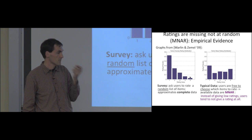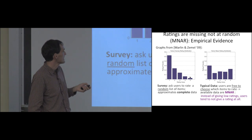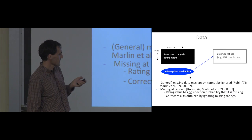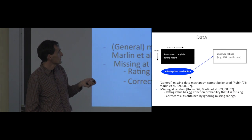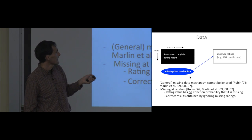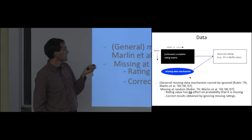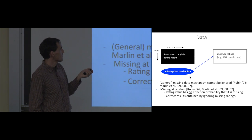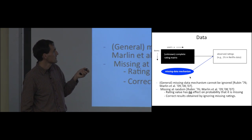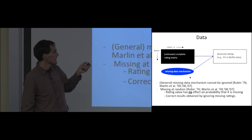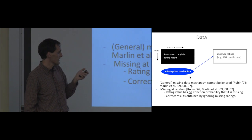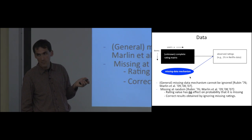To cast it differently: the observed ratings are a function of the unknown complete rating matrix and also of some missing data mechanism. In the Netflix Prize competition, it was assumed that data is missing at random, so there's no information in what entries are observed — making it an easy problem. But if that's not the case, you cannot ignore the missing data mechanism and you have to take it into account.